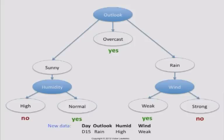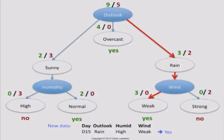So we get our new data example: day 15, it's raining, high humidity, and it's not very windy. How do you compute the prediction? Really simple. You look at the outlook — it was raining — so you go down to that branch. Then you look at the wind, because that's the next attribute on this branch. The wind was weak, so yes, John will play. That's how decision trees work and how they compute predictions.